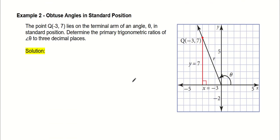All these problems are done pretty much the same way. Let's read the next one. So we have a point, q, which is on negative 3 on the x, and then 7 on the y. It lies on the terminal arm of the angle, this is the angle, theta, in standard position. Determine the primary trigonometric ratios of the angle to three decimal places.